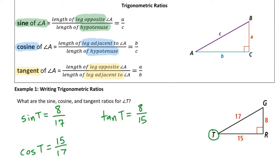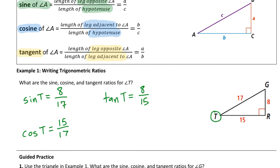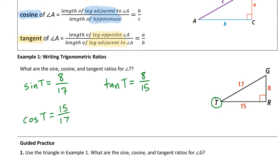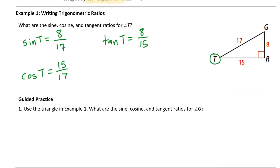Sine, cosine, and tangent depend on the angle that we call the reference angle. In this problem, T was our reference angle. You're going to have to reference these three ratios as we go through problems to practice setting up the equations. We'll focus on solving them later.